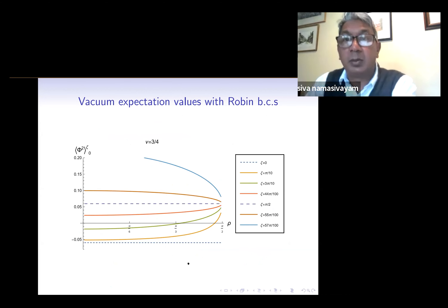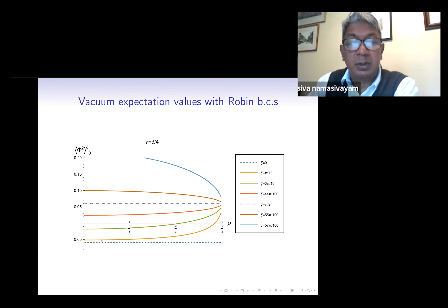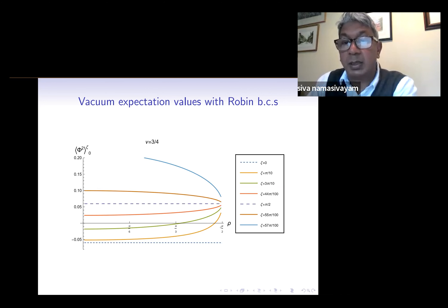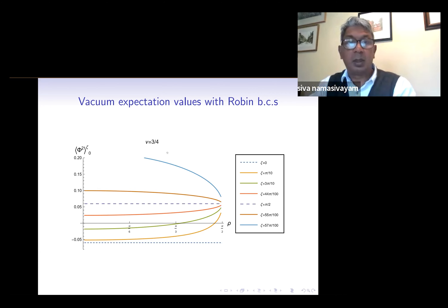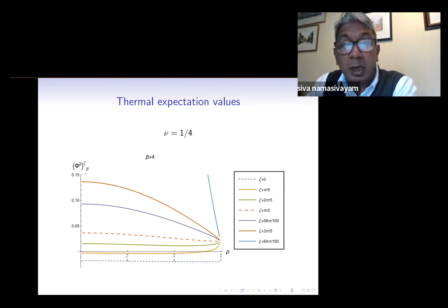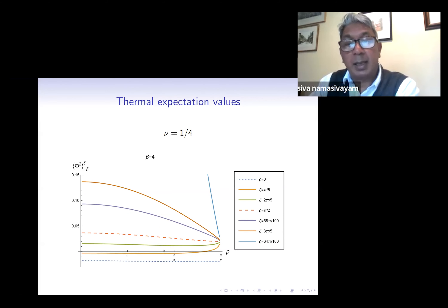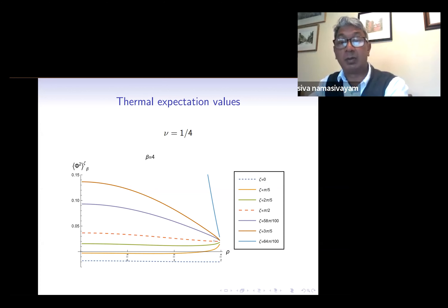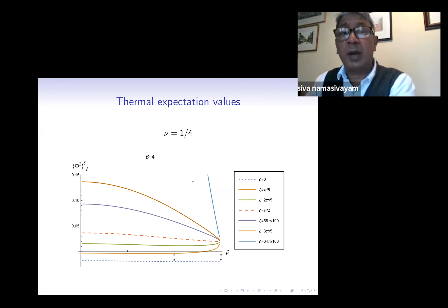These are our results for the vacuum expectation values with Robin boundary conditions for different values of the Robin parameter zeta. When zeta is zero we have Dirichlet and when zeta is pi over two we have the Neumann vacuum expectation value. For all values of zeta studied, the expectation values converge to the Neumann result at the spacetime boundary at pi over two — we found this for all values of nu studied; this example shows nu equals three quarters. We find a very similar result for the thermal expectation values with Robin boundary conditions — here with nu equals one quarter and beta equals four. Again for all values of zeta studied, the thermal expectation values converge to the Neumann expectation value at the spacetime boundary, and we found this for all nu and all beta.